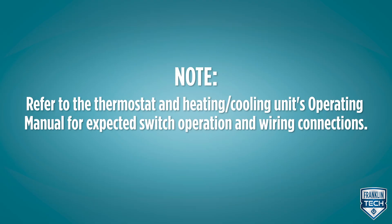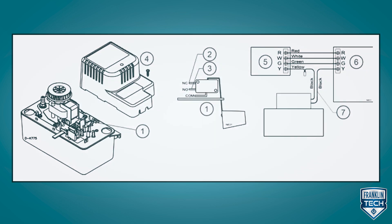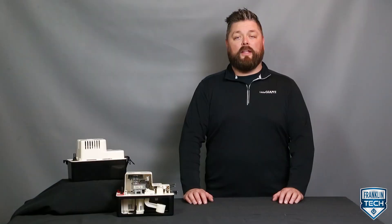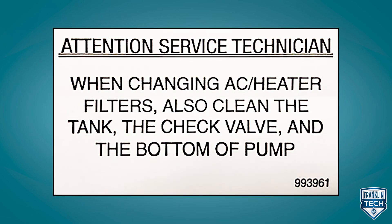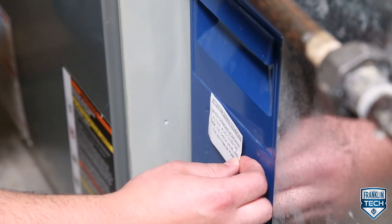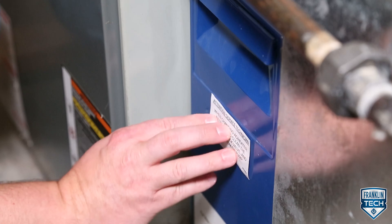Refer to the thermostat in heating or cooling units operating manual for expected switch operation and wiring connections. Connect the switch leads in series with the low voltage thermostat circuit as specified in the heating or cooling units operating manual. Place the attention service technician label included with the pump on the outside of the access panel in a visible location.